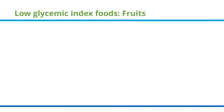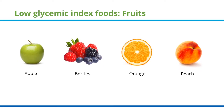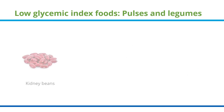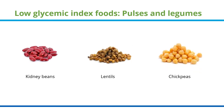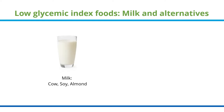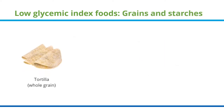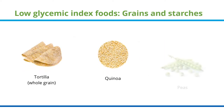Low GI foods include fruits such as apples, berries, oranges, and peaches; pulses and legumes such as kidney beans, lentils, and chickpeas; milk and alternatives including cow's milk, soy milk, almond milk, yogurt made with milk, and Greek yogurt; and grains and starches such as whole grain tortillas, quinoa, and peas.